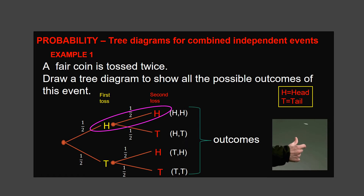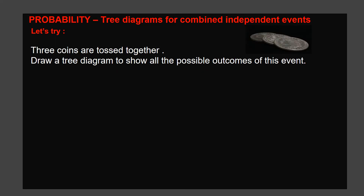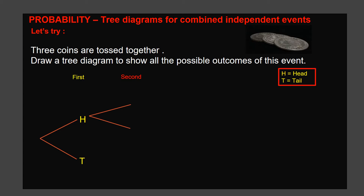Let's try another example. Three coins are tossed together. Draw a tree diagram to show all the possible outcomes. For the first event, we have two possible outcomes. Draw a double branch, write the outcomes at the end of each branch: H for head and T for tail. In the second event, again we have two possibilities. Draw a double branch, label two ends: one H, other T. For each coin we have two possible outcomes — head or tail. Repeat this at the end of each branch for the second and third event.